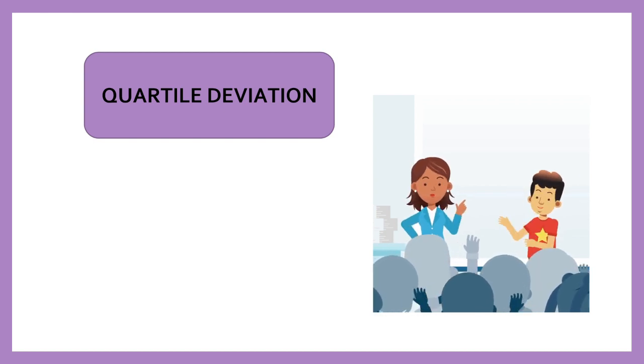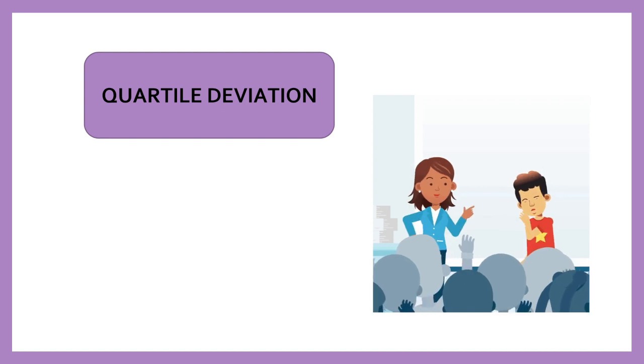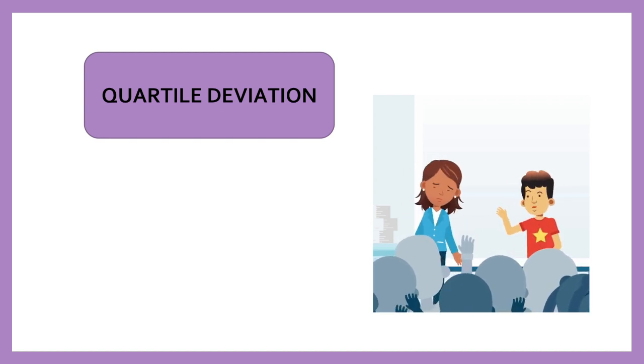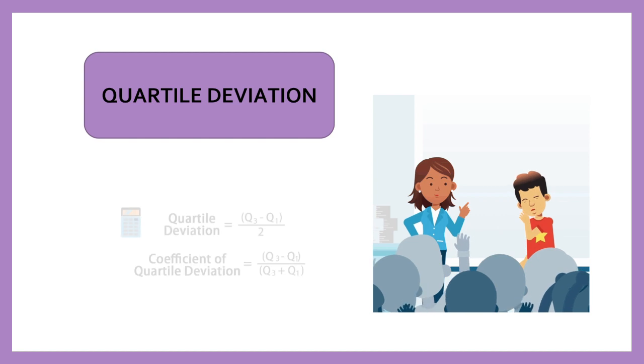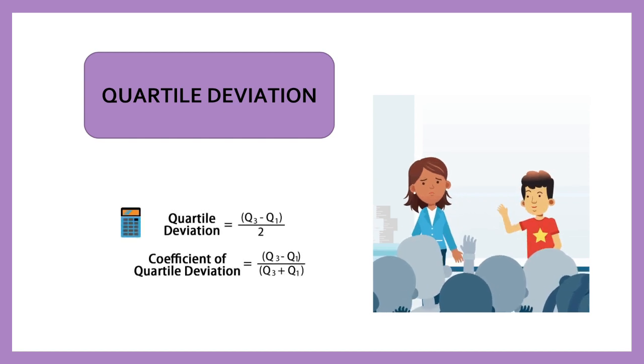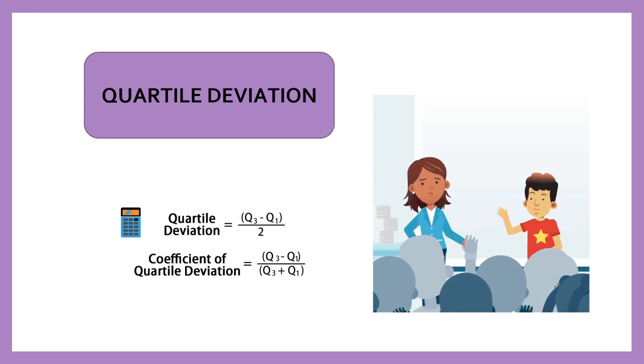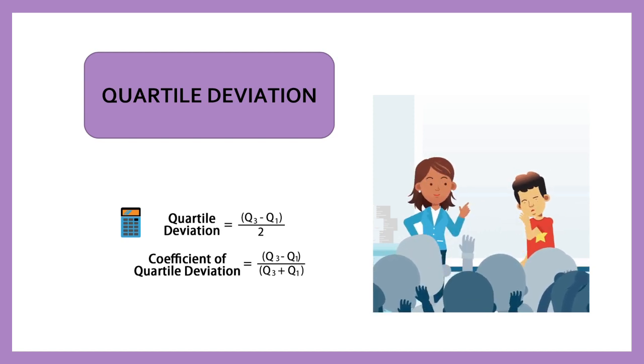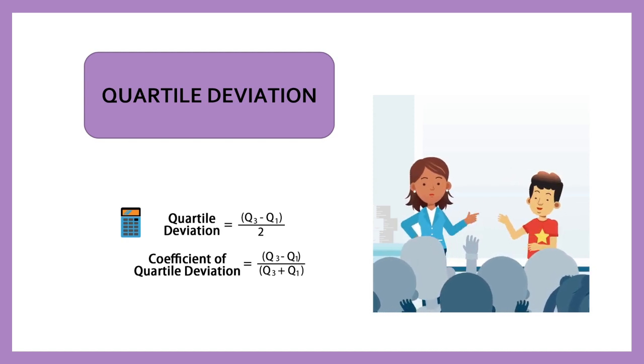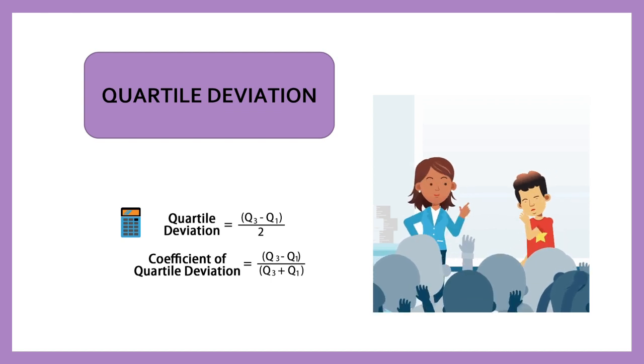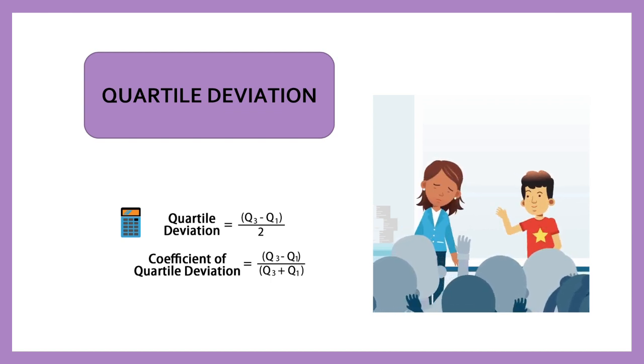Interquartile range is defined as the difference between the two extreme quartiles of a series. Thus absolute IQR = Q3 - Q1, and coefficient of IQR = (Q3 - Q1)/(Q3 + Q1), where Q3 is the upper quartile of a series and Q1 is the lower quartile of a series.